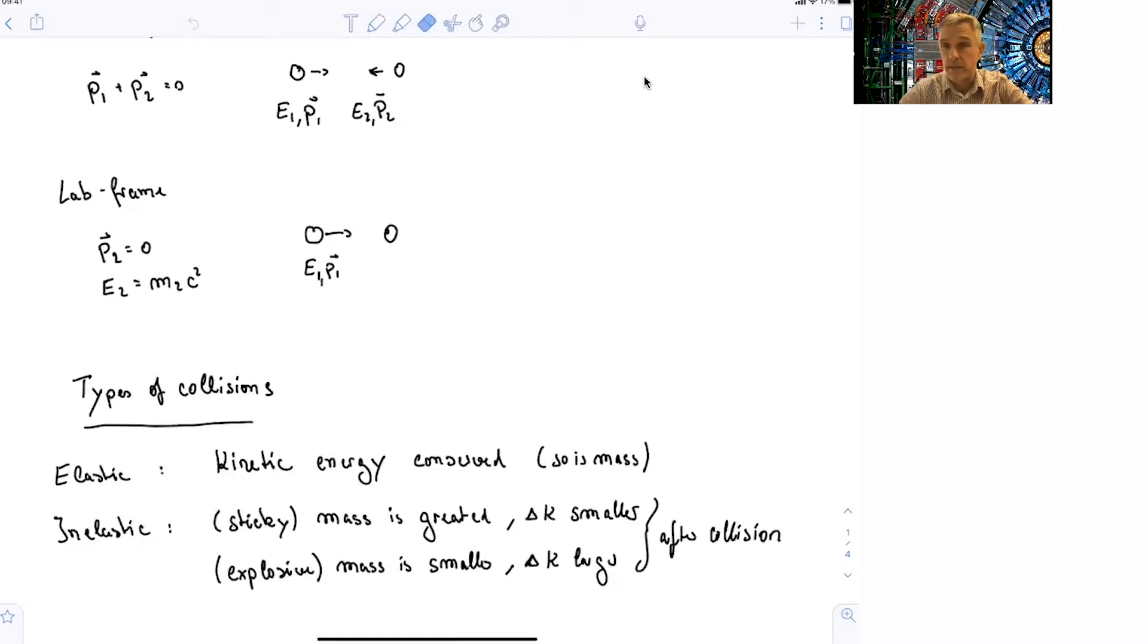The total kinetic energy in these collisions are typically conserved. But we can also have inelastic collisions. And there's two different kinds, so sticky kinds, where the mass after the collision is greater. So you have two particles, for example, maybe they stick together like Play-Doh balls.